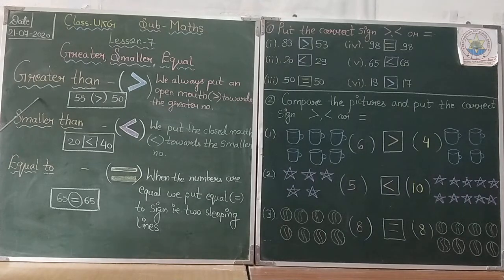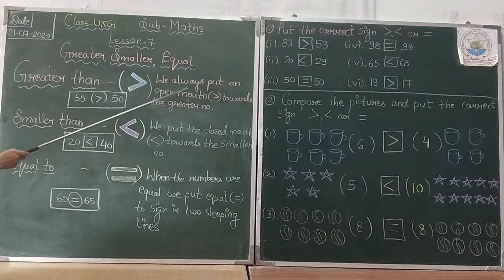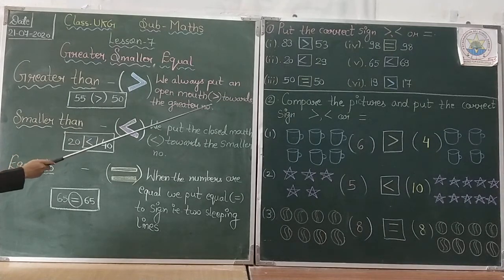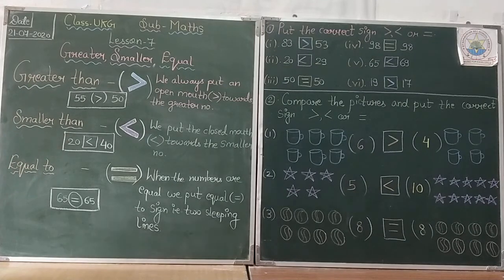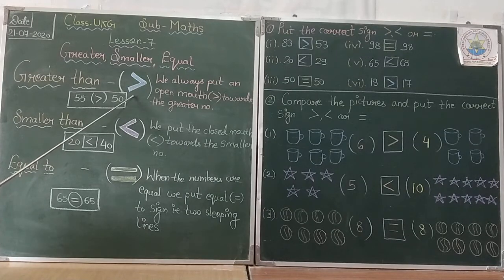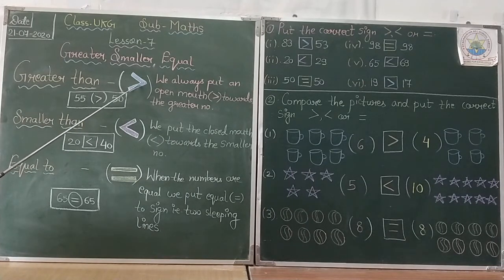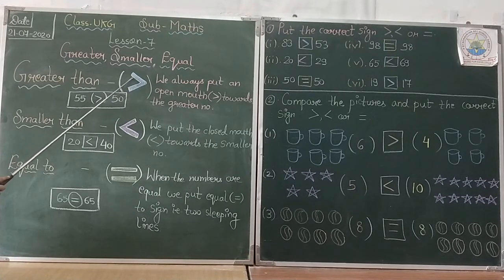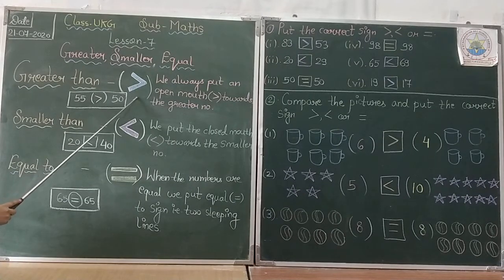First we will understand about greater than. We always put an open mouth towards the greater number. Greater means bada. یہ جو آپ sign دیکھ رہے ہیں، open mouth — یہ جو اس کا مو کھلا ہے — تو یہ اس sign کا جو number بڑا ہوتا ہے، اس side اس sign کا مو کھلا ہوتا ہے۔